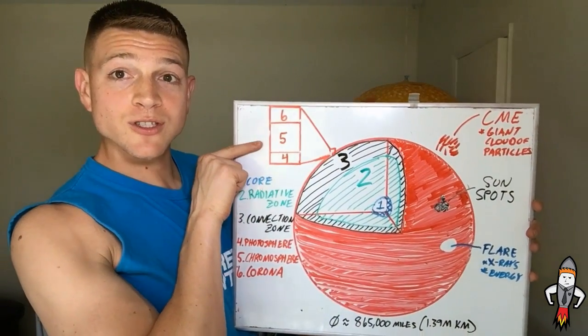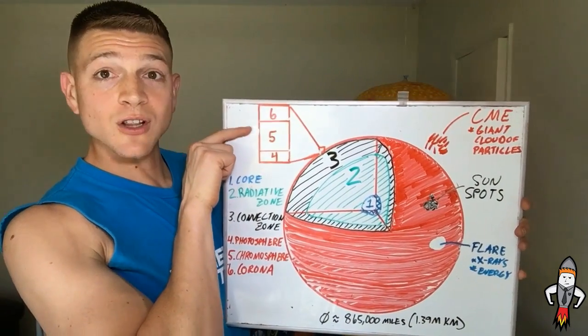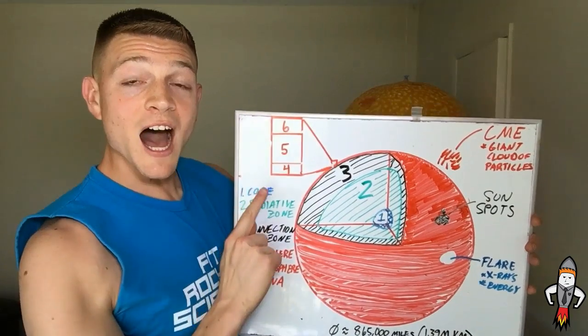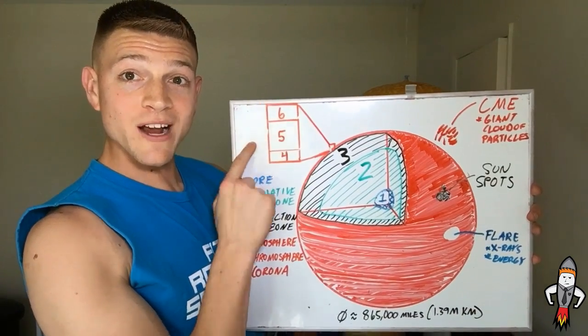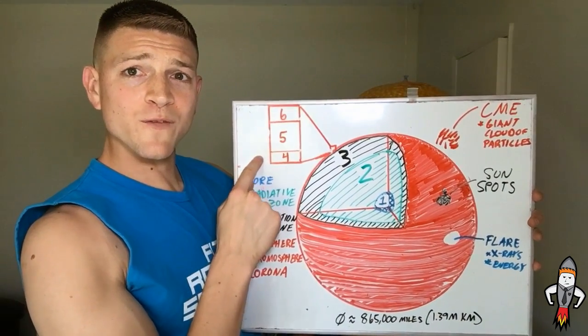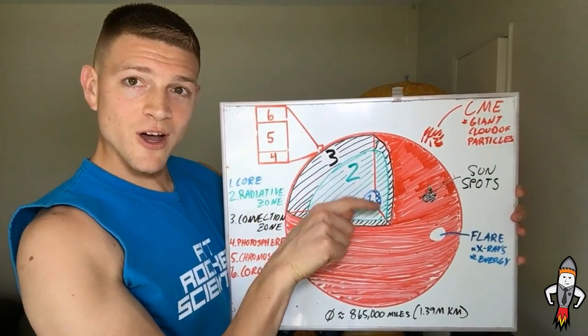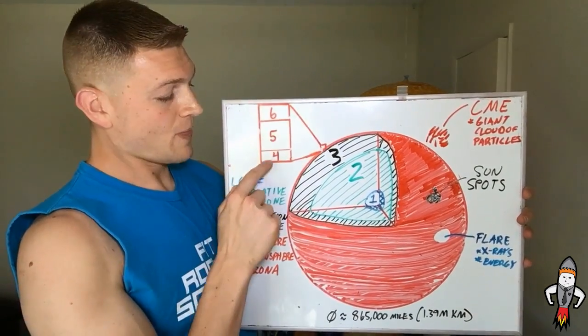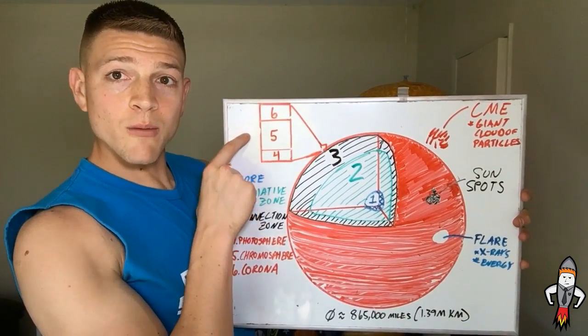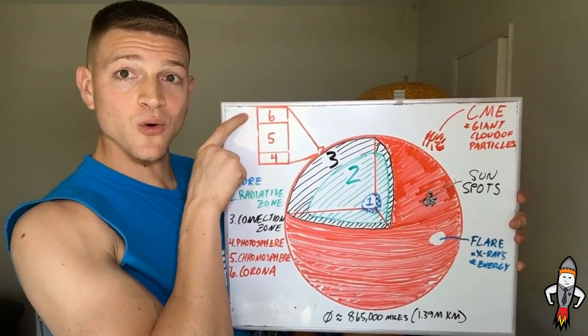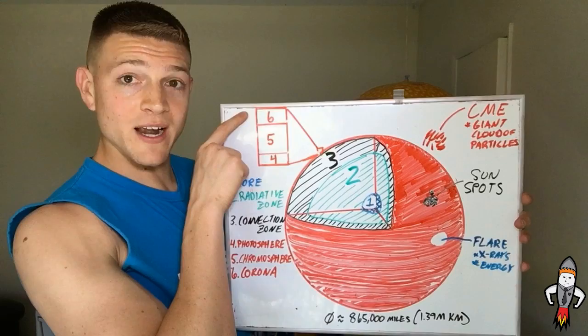All right, move on to number five, which is the chromosphere, which covers a lot of the outermost layer. It actually gets hotter as you go through these outer layers. Five is hotter than four, six is hotter than five. It's kind of strange. It's like a medium point. It gets hotter as you go in and then hotter as you go up. So photosphere, chromosphere, and then the sixth one is the corona.